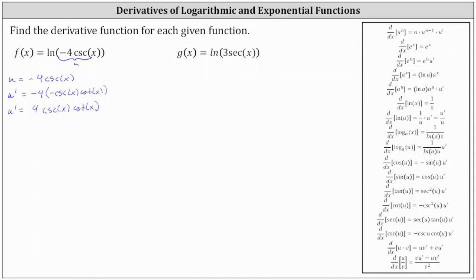So now we can just think of f of x as f of x equals natural log u. The derivative of natural log u with respect to x is equal to one divided by u times u prime, or u prime divided by u. Therefore, f prime of x is equal to one divided by u, which is one divided by negative four cosecant x, times u prime, where u prime is equal to four cosecant x times cotangent x.